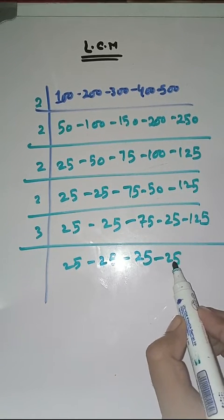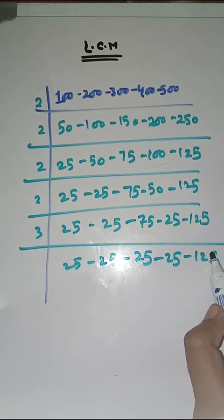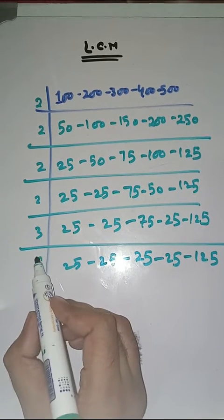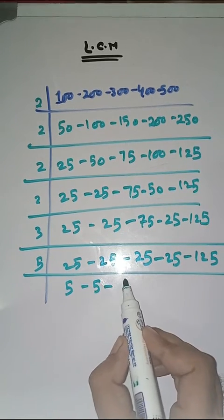25 as it is, 25 as it is, 25 as it is, 5 times 5s are 25, 5 times 5s are 25, 5 times 5s are 25, 5 and 25.